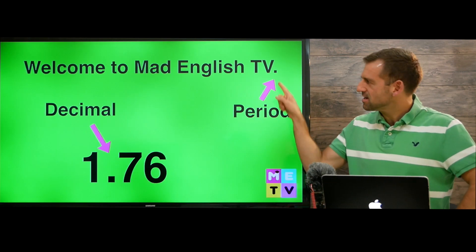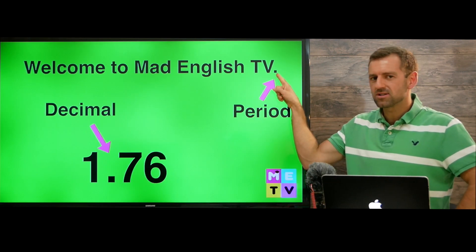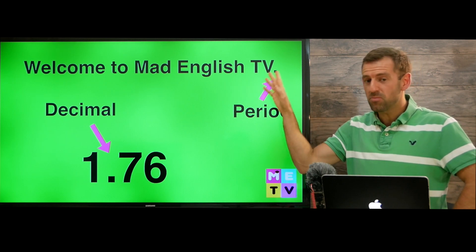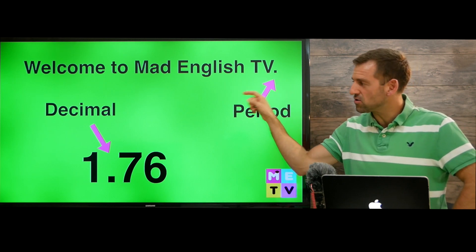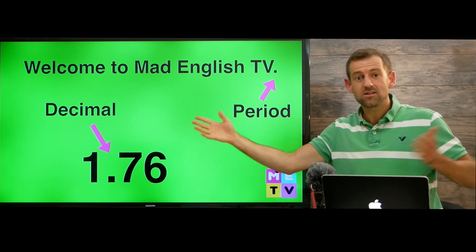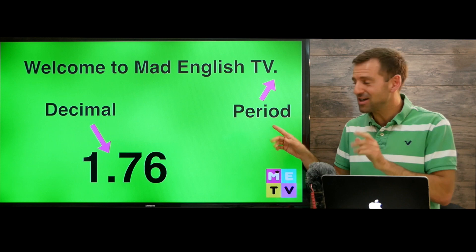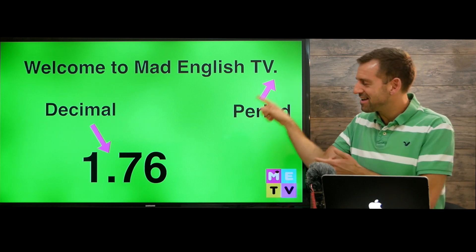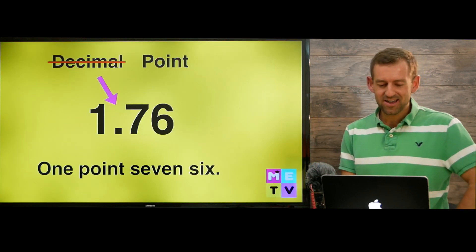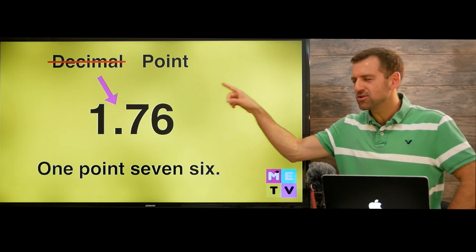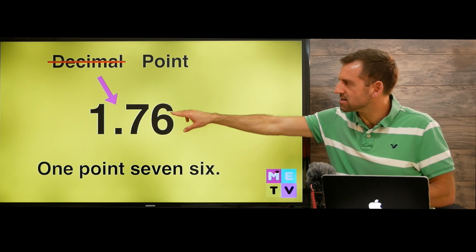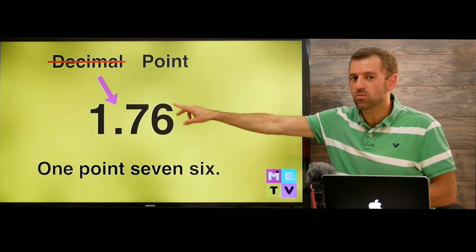So this thing here is called a period when you use it with words, but it's called a decimal when you use it in a number. It's just here it's called a period and here it's called a decimal. Now we never actually use the word decimal when we say a number like this — we use the word point.